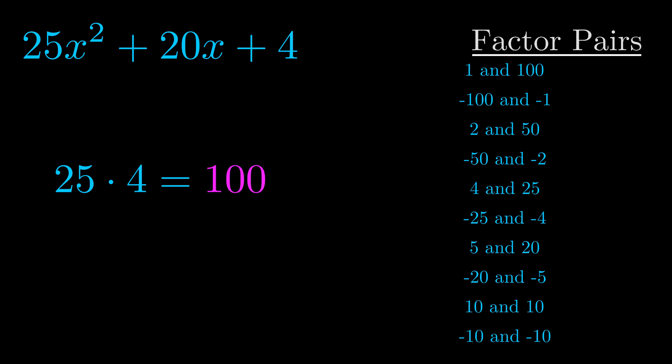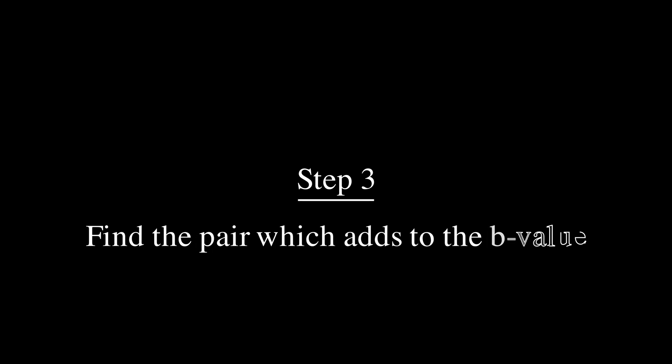Now once you have these factor pairs, the goal is to find which of these pairs adds to the b value. The b value is the coefficient on the x term.